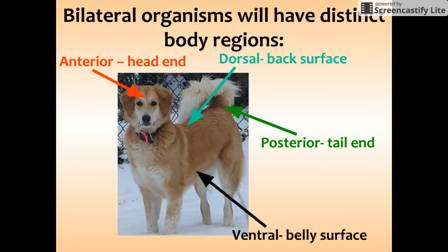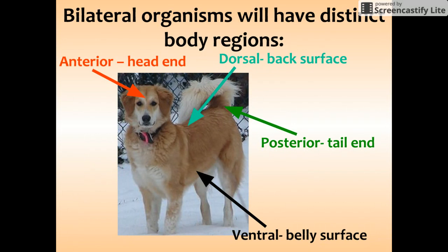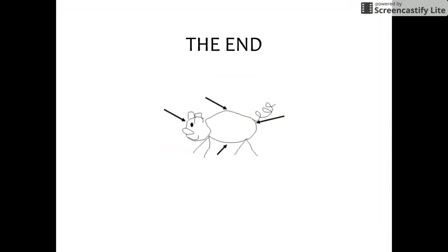If an organism is bilaterally symmetrical, it will have four body regions: the anterior, the posterior, the dorsal, and the ventral. I would strongly suggest doodling a little sketch of an animal and labeling these regions in your notes, as you will be responsible for knowing these terms. Dorsal is easy — we've all heard of it because of the dorsal fin — but ventral, anterior, and posterior may be new to you. Those are the characteristics of the animal kingdom.